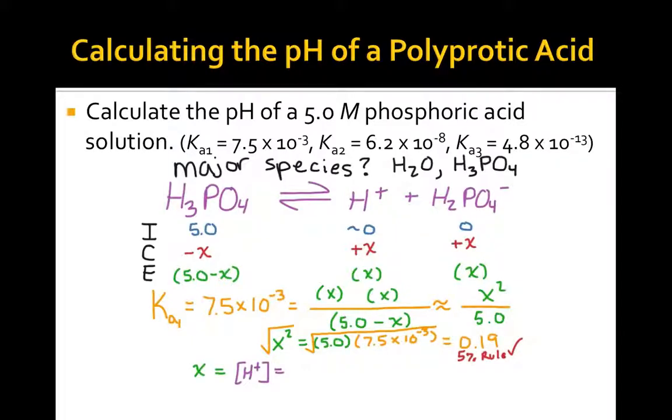According to the 5% rule, this approximation is good. Now that we know the hydrogen ion concentration, we can determine the pH, which for this 5.0 molar phosphoric acid solution, pH is 0.72.